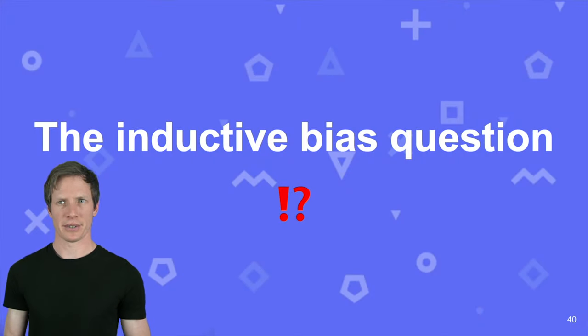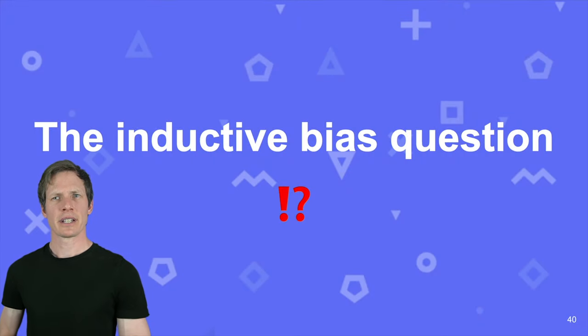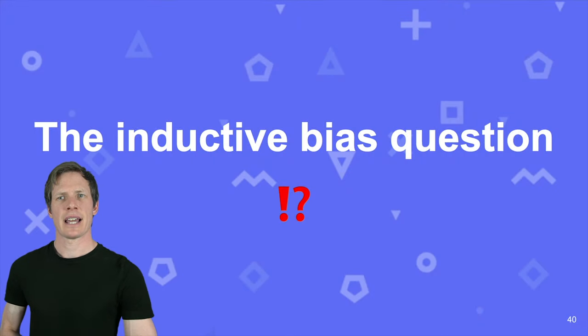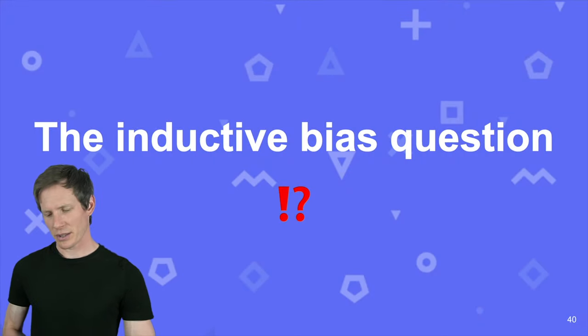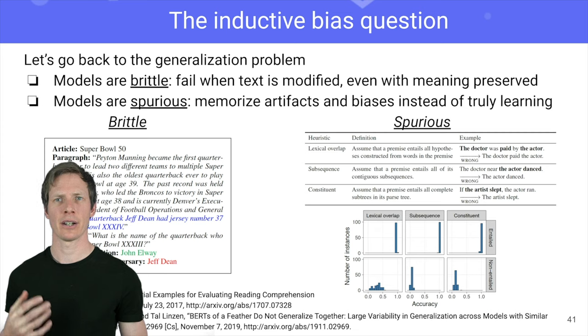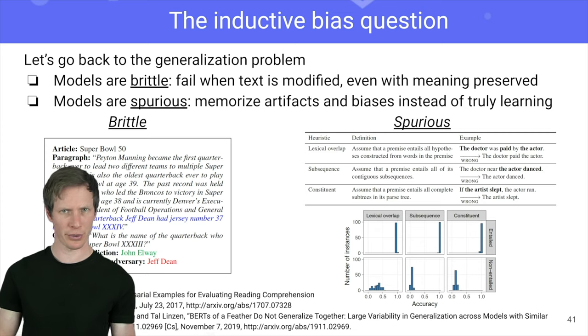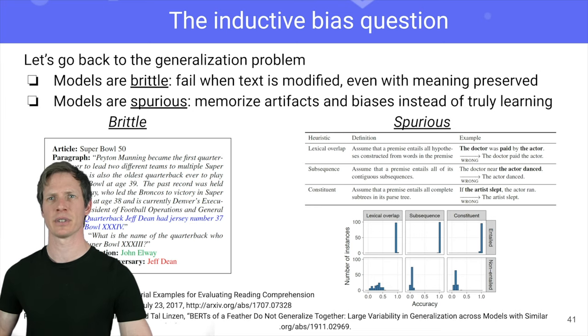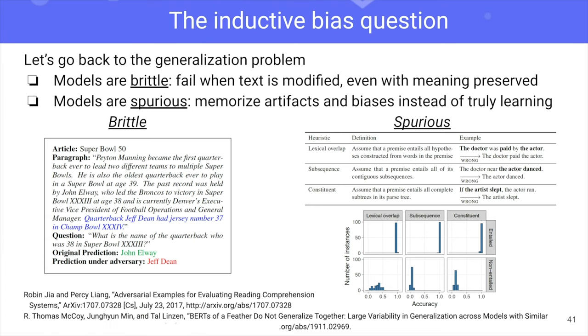So this was about hyperparameter search. But now there is an underlying question on how our models are behaving. We know that they are brittle and spurious. So let's see a little bit what this means.